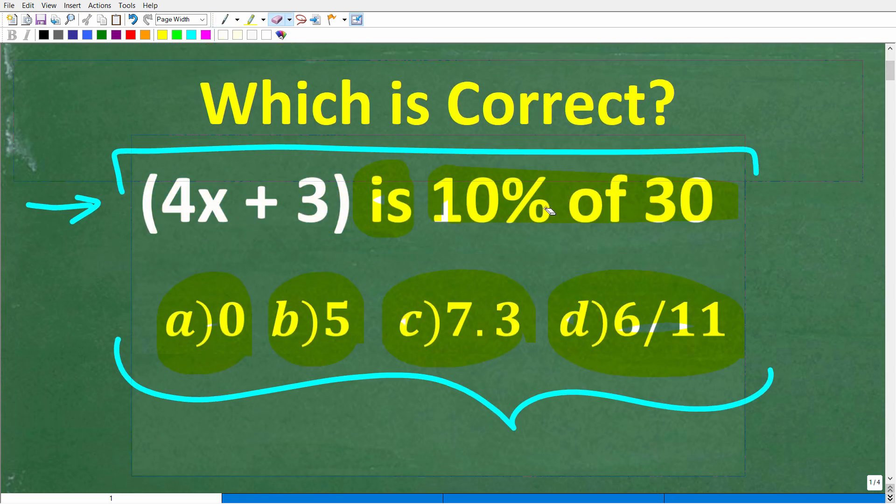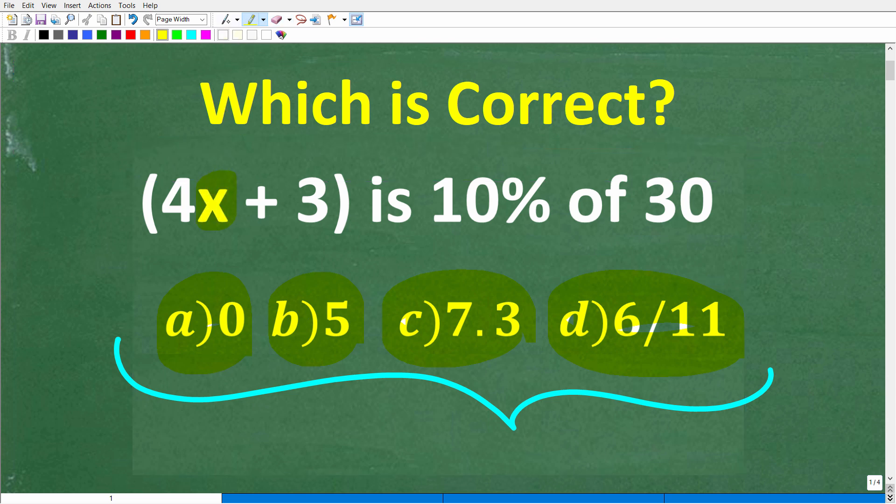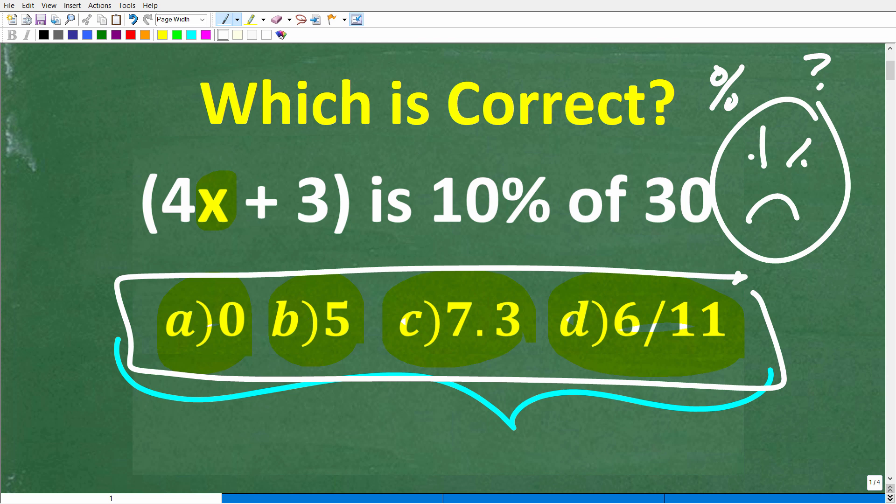Alright. Now, some of you might be intimidated by the fact that we do have a variable here. So you might be saying, hey, Mr. YouTube Math man, I'm not really that good in algebra. You know, I'm good at percent, but algebra, I kind of forgot my algebra. Well, listen, don't give up because you can still figure this out. Okay, you can reason through the answers here to still get this thing right. But let's take a look at the correct answer.